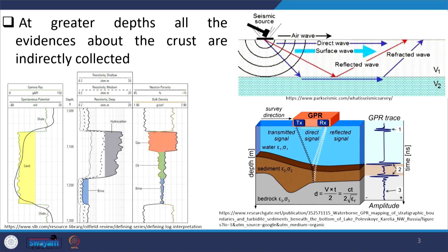At greater depths all evidence about the crust is collected indirectly. The most significant and most widely used indirect method is the seismic source — seismic velocities. Seismic waves move down, interact with different crustal rock layers, and return as reflected and refracted waves. By studying these reflected and refracted waves we get information about what is happening inside.